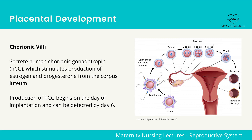Placental development includes chorionic villi, placenta hormones, fetal membranes, umbilical cord, and amniotic fluid. The chorionic villi secretes human chorionic gonadotropin, known as HCG. HCG stimulates the production of estrogen and progesterone from the corpus luteum.